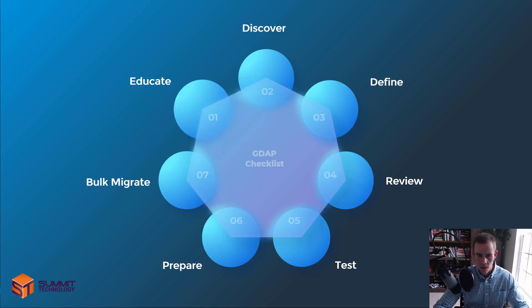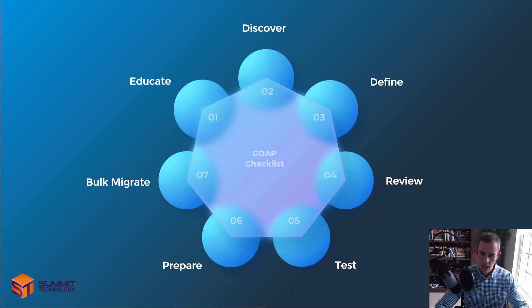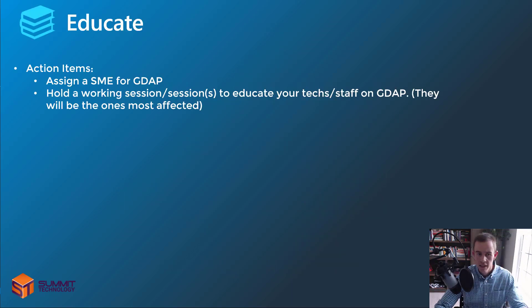Getting into it, like I mentioned, this is a checklist you can use within your organization. We're going to be going through each one of these — there are seven different steps which includes: educate, discover, define, review, test, prepare, and bulk migrate.